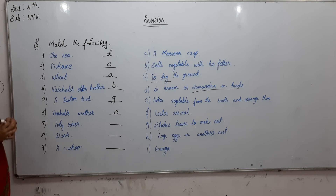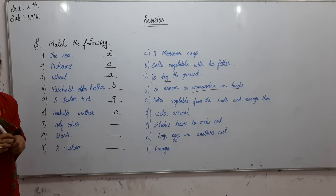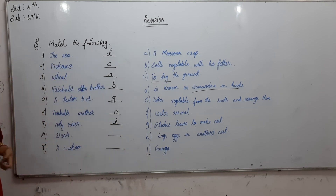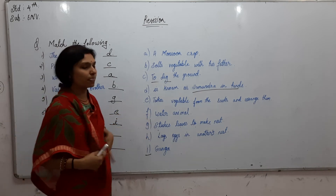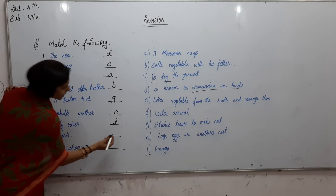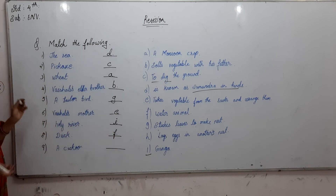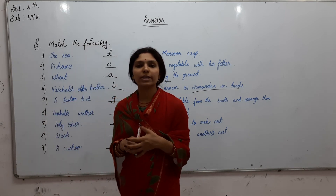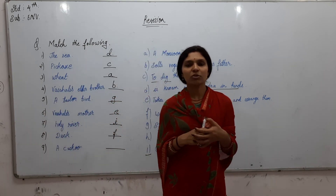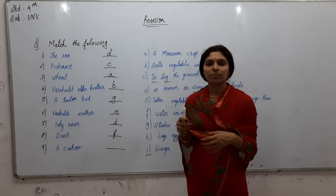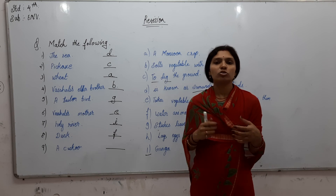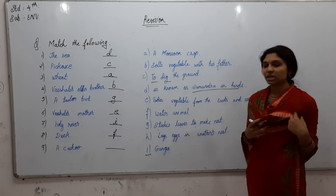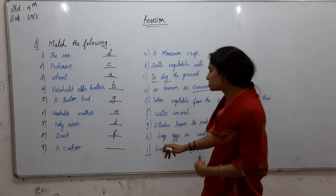Holy river — we read in our chapter that the Ganga is a holy river, so the answer is Option G. A Duck — the duck is a water animal that lives in water, so the answer is Option F. A Cuckoo — the cuckoo does not build its own nest or lay eggs in it. Instead, it goes to the crow's nest and lays its eggs there. The crow, thinking they are its own eggs, incubates them and provides warmth, from which the chicks hatch — so the answer is Option H.